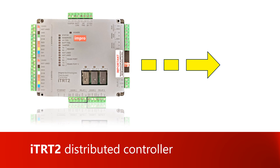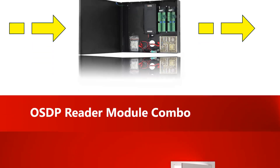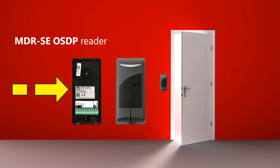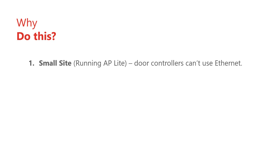This video will show you how to connect a master RTRT2 distributed controller to a slave cluster controller OSDP reader module combo and then connect that to an MDRSE OSDP reader. There are two reasons why you may need to do this. The first reason is AP Lite doesn't support Ethernet door controllers. If you require an additional door controller at an AP Lite installation, it must be connected to the AP Lite master controller via RS485.